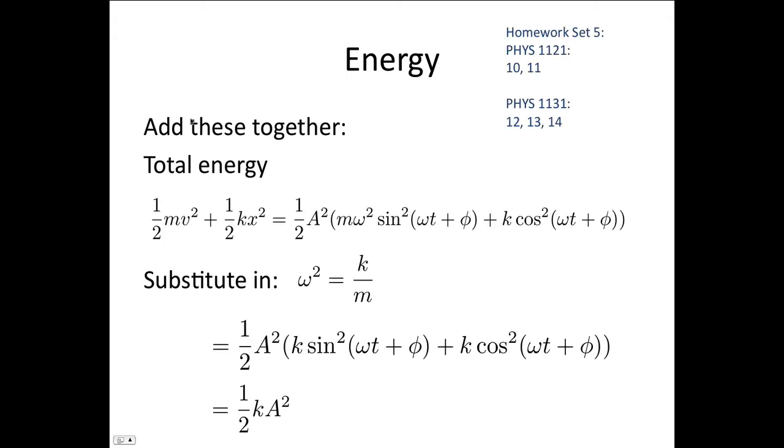To get the total energy, we just need to sum the kinetic energy and the potential energy. We can take A squared out as a common factor, and then we can make the substitution ω squared equals k/m. So substituting that in, we end up with this expression. We can pull k out the front, and you know that sine squared theta plus cos squared theta is equal to 1. So replacing this sine squared(ωt + φ) plus cos squared(ωt + φ) with 1, we end up with the total energy is 1/2 kA squared.